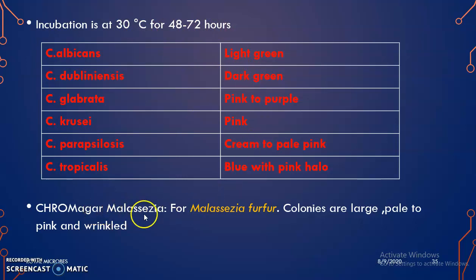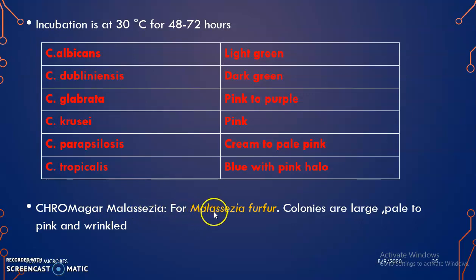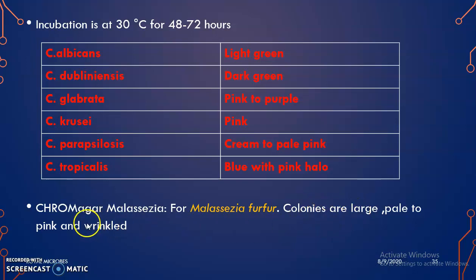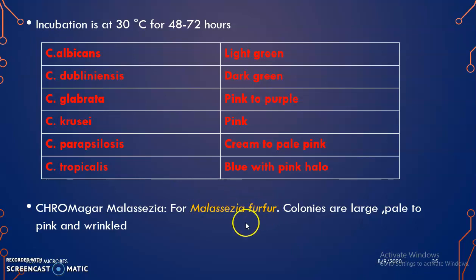CHROMagar Malassezia is a medium used for isolation of Malassezia furfur. Here the colonies are large, pale to pink in color, and they are wrinkled colonies. That is Malassezia furfur; it can be isolated by using CHROMagar Malassezia.